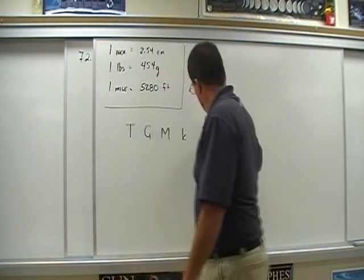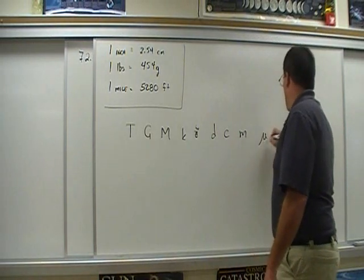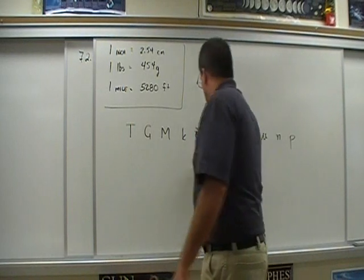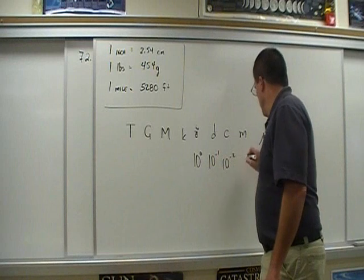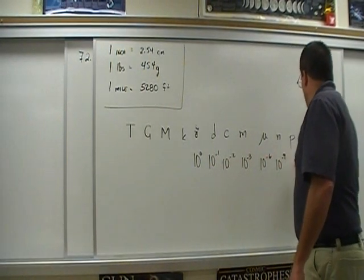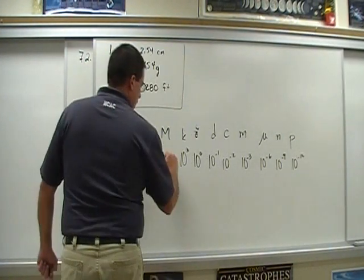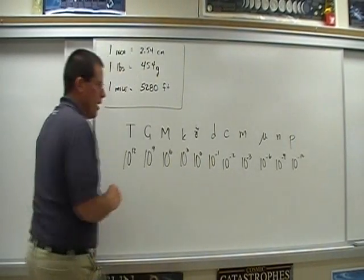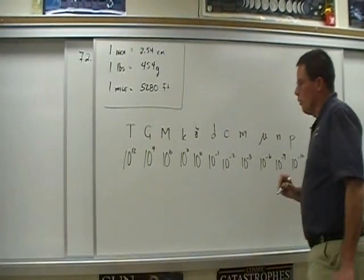What we also learned last week, we did our metric conversions or prefixes. The great mega king one day caught me microwaving nasty pizza, right? And then anything to the zero power is one. Deci negative one, centi negative two, and then the three, six, nine, twelve, all the way out. You're going to find out that you will probably be writing this on every homework, every quiz, and every test. Nothing wrong with that.